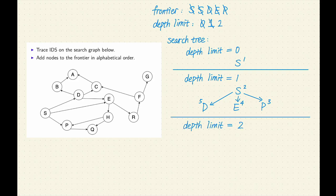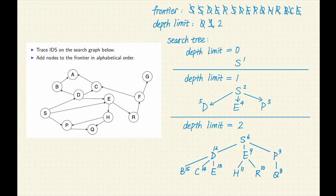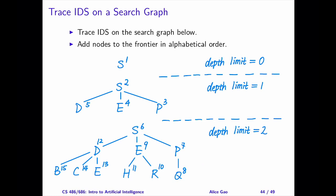By now you should have a sense of how IDS works. Let me show you the search tree after we're done with depth limit equals 2. IDS still has not terminated — we need to increase the depth limit again and perform DFS again. As you can see, IDS is mimicking the behavior of BFS in the sense that it is increasing the depth limit by one each time. Doing this ensures that IDS does not miss the shallowest goal node. For each depth limit, IDS tries to save space by performing DFS instead of BFS.